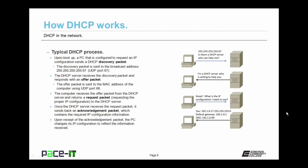Once the computer receives the offer packet from the DHCP server, if it's going to use that server, it returns a request packet — requesting the proper IP configuration from that specific DHCP server. Once the DHCP server receives the request packet, it sends back an acknowledgement packet containing all of the required IP configuration information. Once the PC receives the acknowledgement packet, the PC changes its IP configuration to reflect the information received from the DHCP server. That's the typical DHCP process in a nutshell.